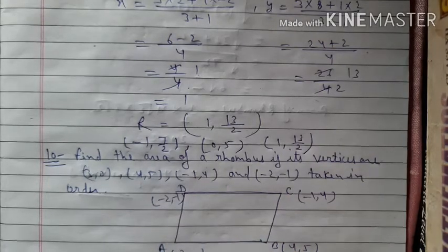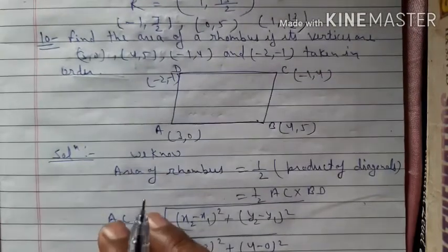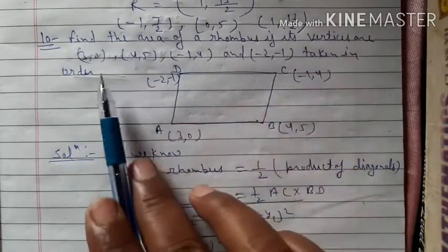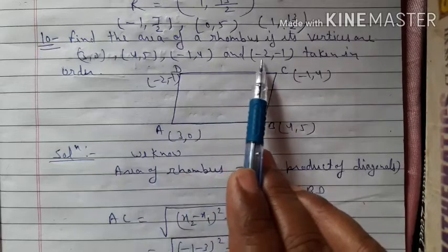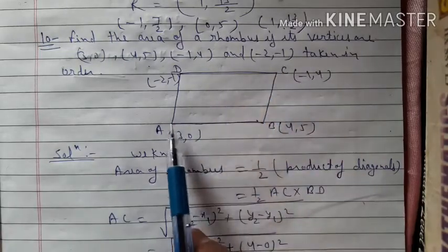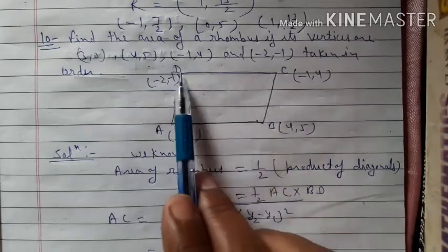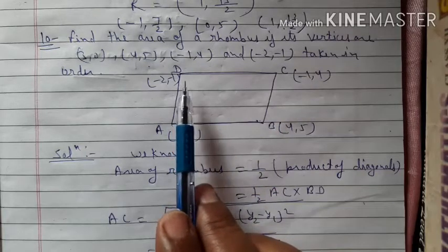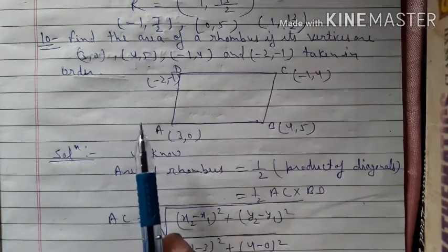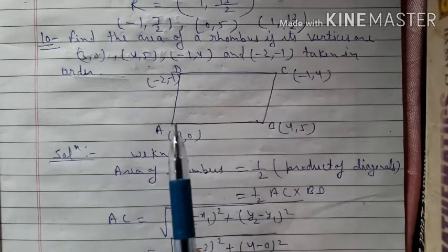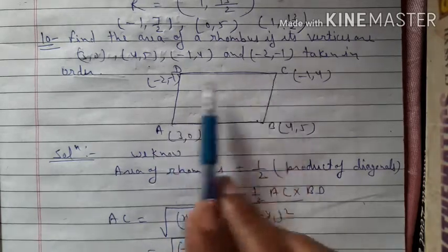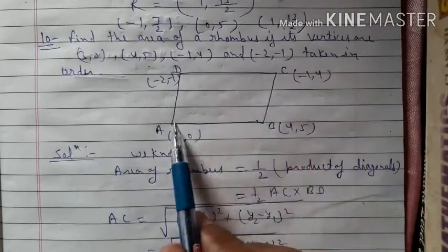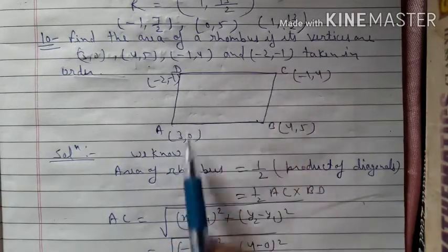This can also be constructed using midpoint method. Now question number 10: find the area of a rhombus if its vertices are A(3,0), B(4,5), C(-1,4) and D(-2,-1) taken in order. Area of rhombus = (1/2) × AC × BD, so we find the lengths of both diagonals using the distance formula.